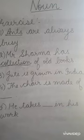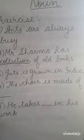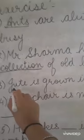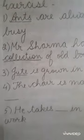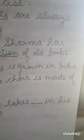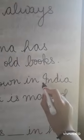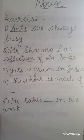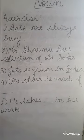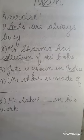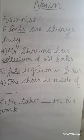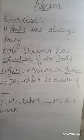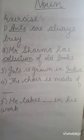Third: 'Jute is grown in India.' There are two nouns. First is Jute, because it is a thing, and second is India, because it is the name of a place. In the fourth one, we have to fill in the noun: 'The chair is made of ___.' You can write wood or plastic — both are material nouns.